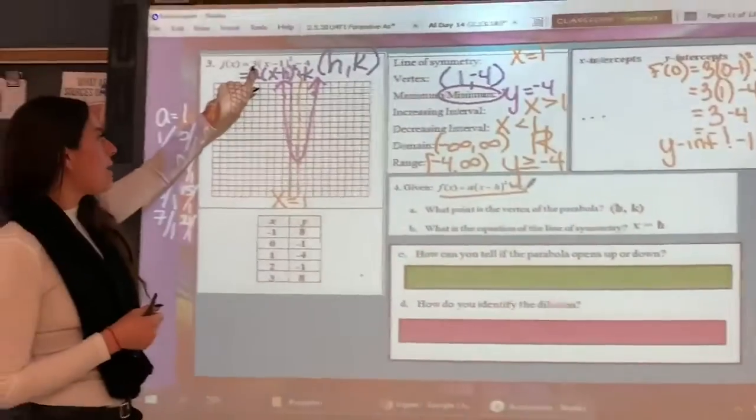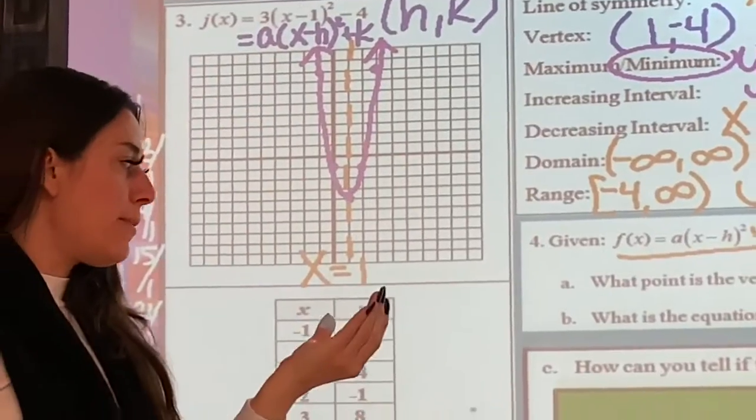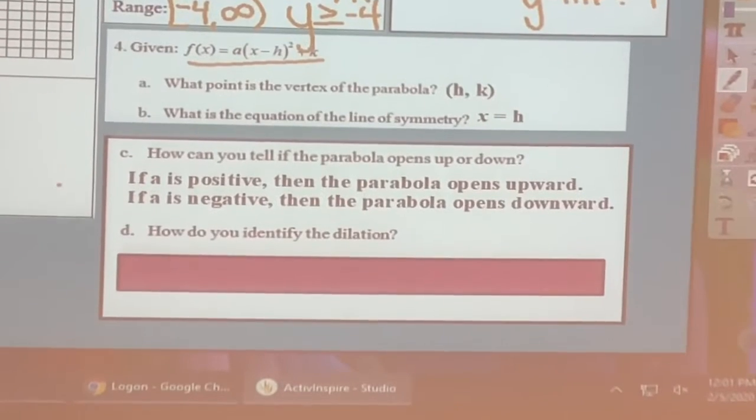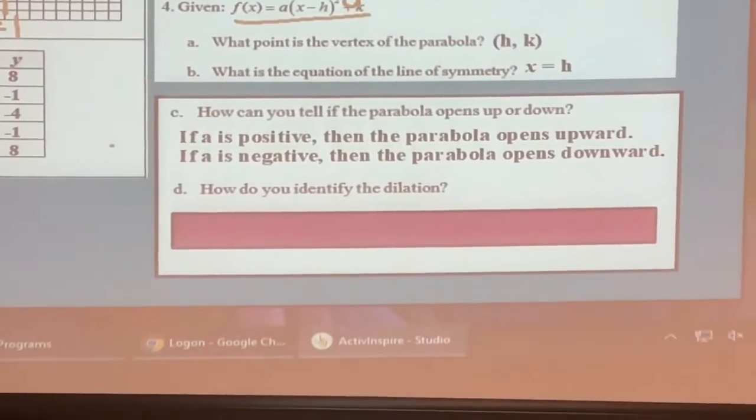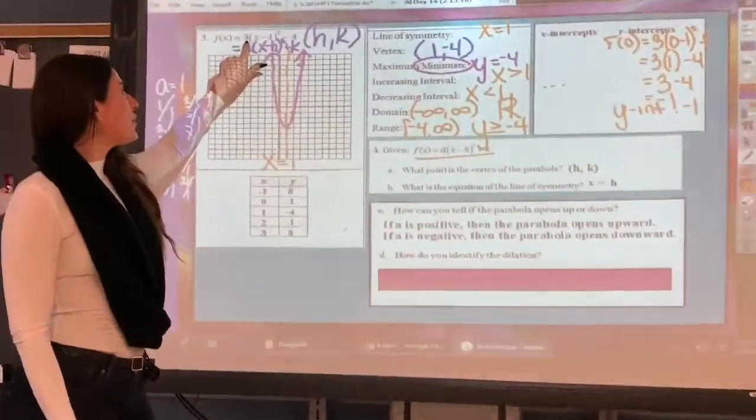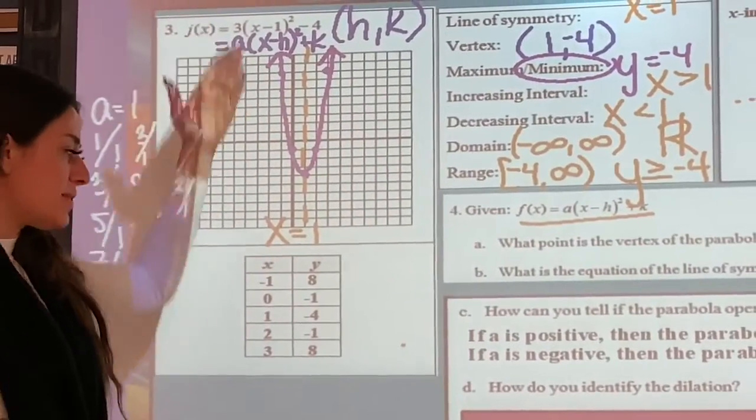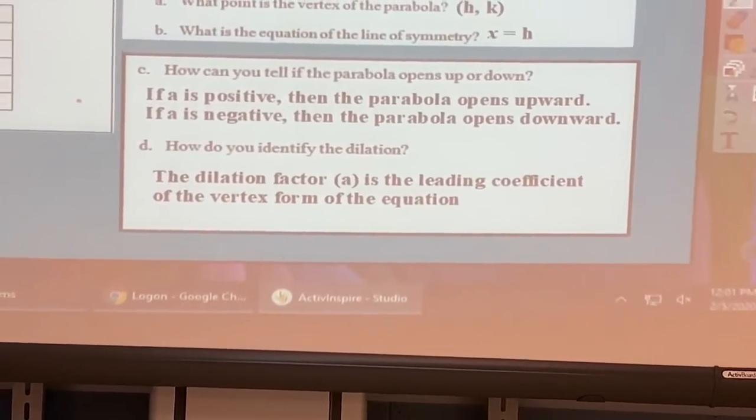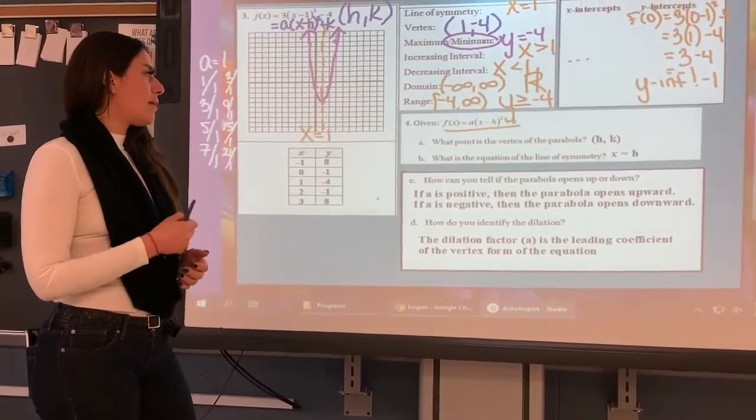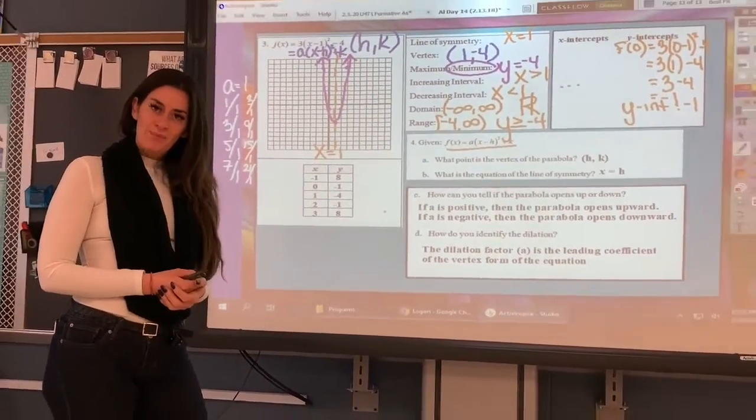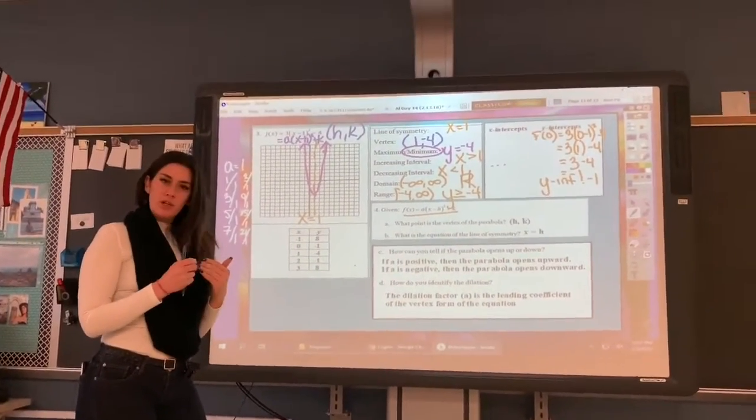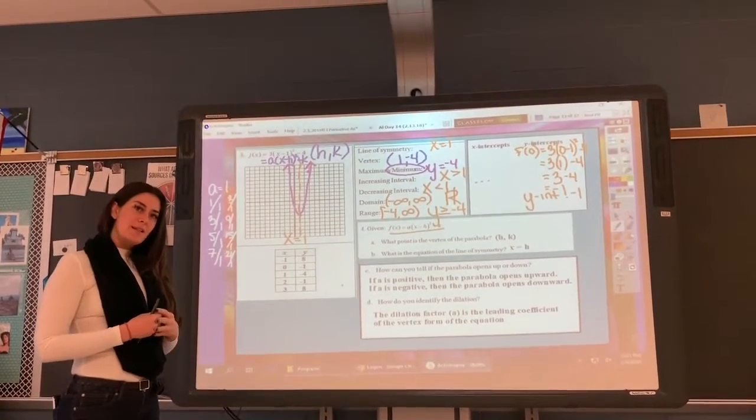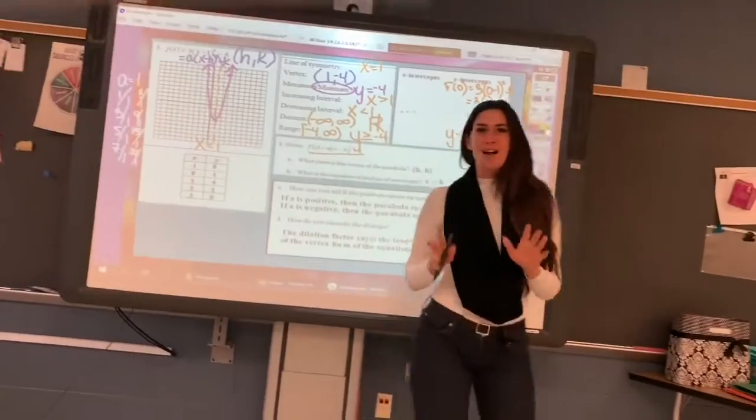How can you tell if the parabola opens up or down? Well, if this a value is a positive number, it's going to open up. If it's negative, it will open down. And then how do you identify the dilation? Again, dilation is your growth rate, so that's associated with your a value. So this one is growing three times faster. I'm just going to summarize by saying it's your a value, and that would be the leading coefficient of the vertex form of the equation. So please feel free to comment if you have any questions below. Remember to like and subscribe. Hopefully this was helpful for you and kind of summarize everything you need to know. Like and subscribe. Bye.